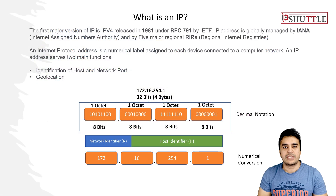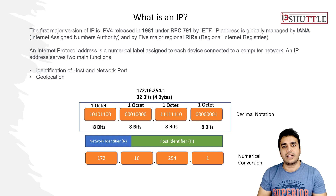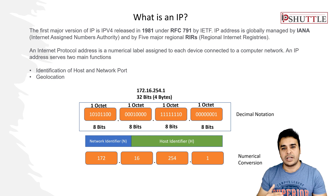Let's assume we want to assign 12 bits to the network identity and the remaining bits to host identification. Taking the IP address 172.16.254.1 and converting it to decimal notation, you can then understand the numeric values behind these decimal notations.